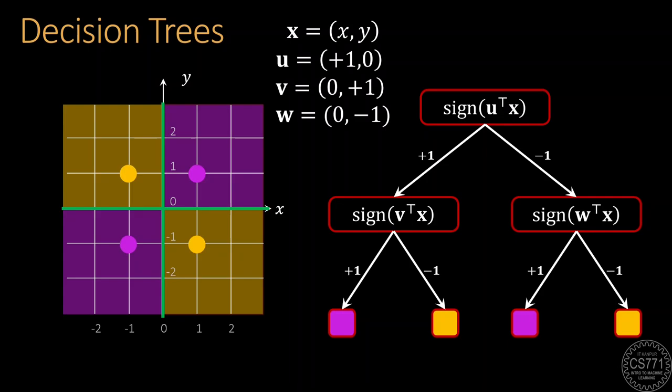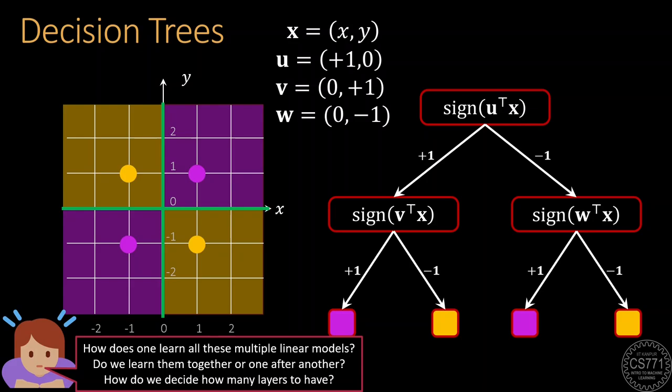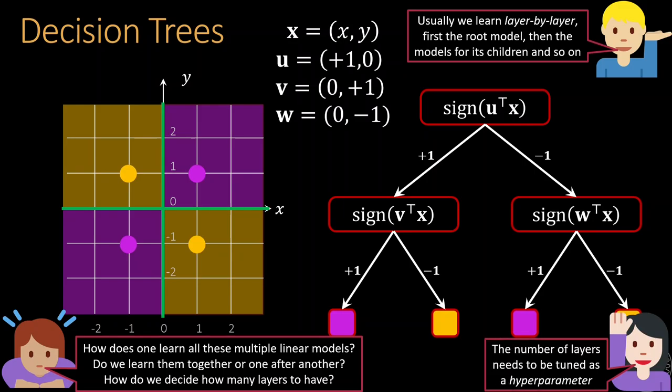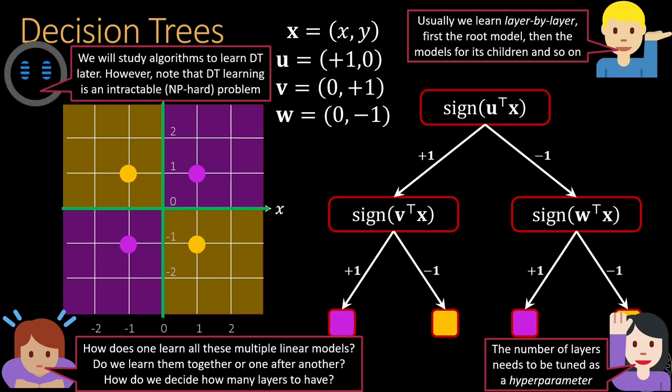Details of how decision trees are learnt will have to wait for another day. Decision trees are usually learnt layer by layer, with the number of layers having to be decided by the machine learning model designer as a hyperparameter. Also note that decision tree learning is known to be an intractable NP-hard problem, which means that it is unlikely that a polynomial time algorithm exists that will learn the best, most accurate and most efficient decision tree.